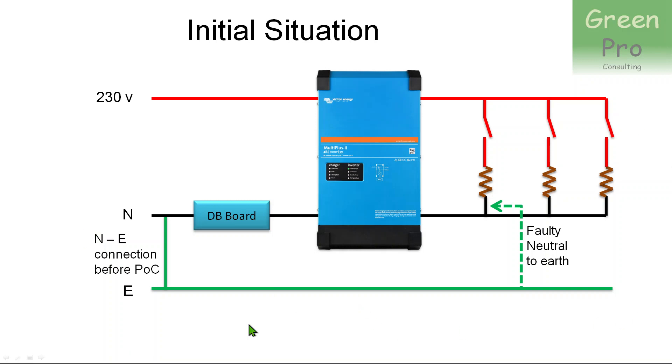There's a bit more of a graphic presentation of that. So we come into the property, you have this connection between neutral and earth, you go into the DB, somewhere in the DB, your main DB, you should be branching out to your inverter. And in the loads of the inverter, what Victron is telling you there's a connection somewhere here between neutral and earth.